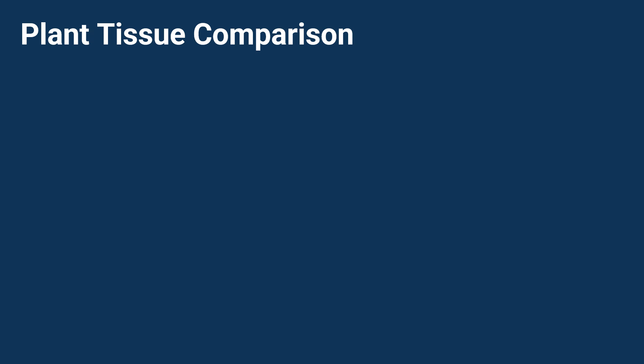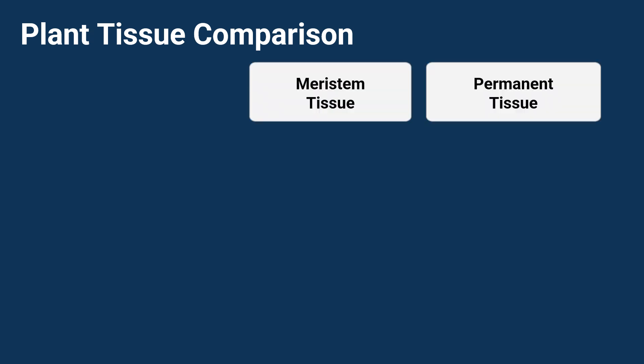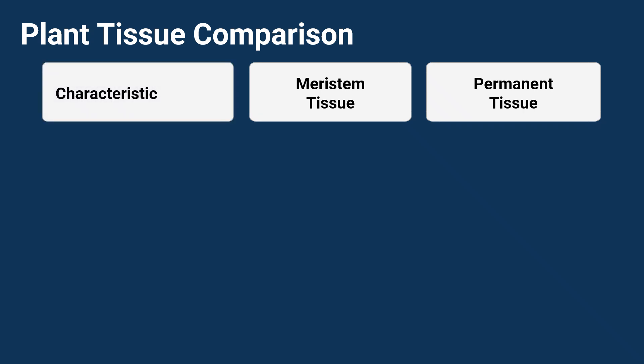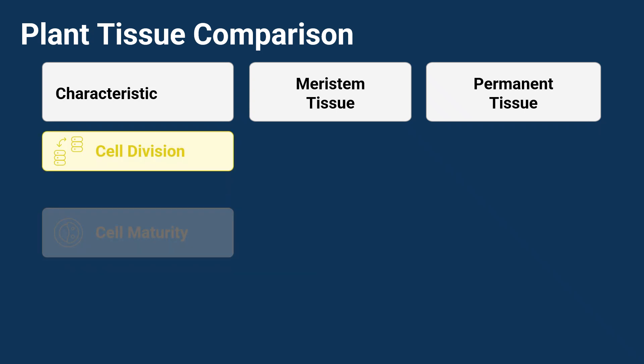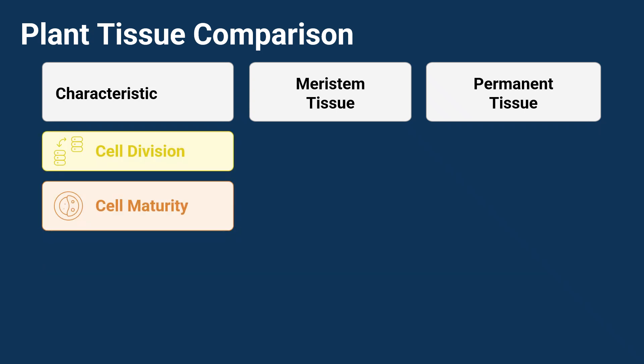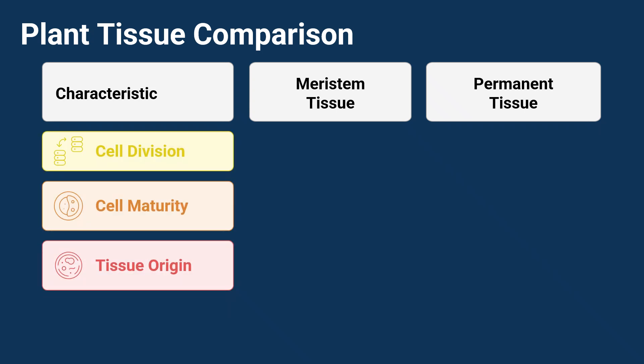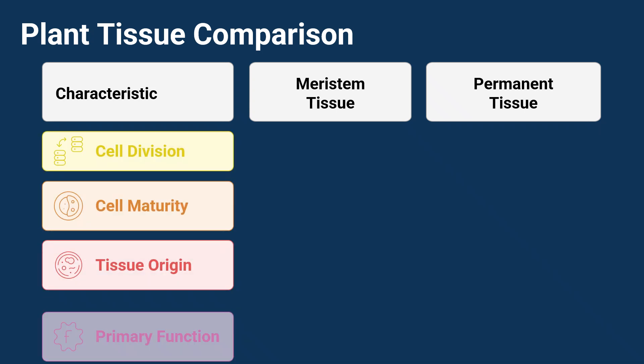Let's chat about plant tissues, specifically two super important types: meristem tissue and permanent tissue. We'll break down how they're different based on four things — how their cells divide, how mature they are, where they come from, and what their main job is.